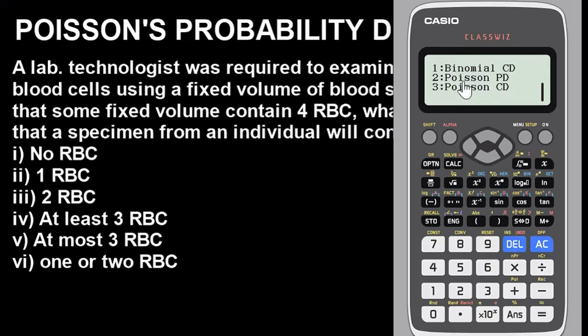When you get here, you will see Poisson PD and Poisson CD. For sub-questions (i), (ii), (iii), and (vi), we use Poisson PD to solve them. For sub-questions (iv) and (v), we use Poisson CD. Basically, Poisson CD — the cumulative distribution — is used to solve questions involving 'at least' and 'at most.' Let's begin with Poisson PD by pressing 2.